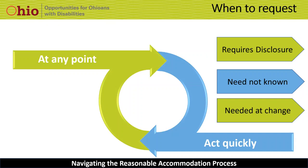When an employer receives a request for an accommodation, what is the first thing they should do? The EEOC guidance tells us to act expeditiously — meaning once you receive a request, you should act quickly to begin the accommodation process. First, contact the person making the request so they know it was received. Next, inform the person of what the steps in the process include and what to expect. Then, schedule a time to discuss the request further if you're not planning to do so in that initial conversation.